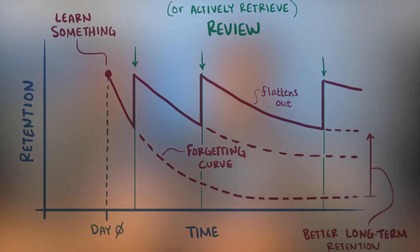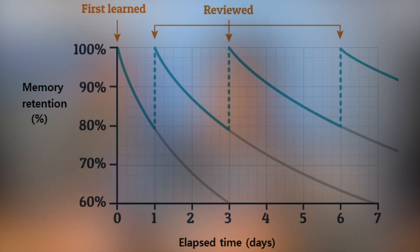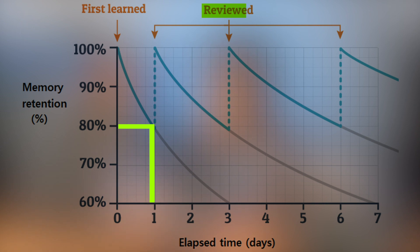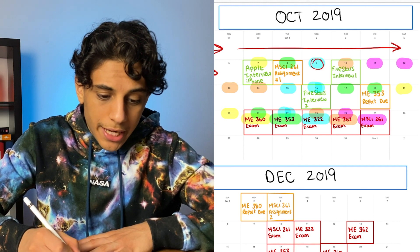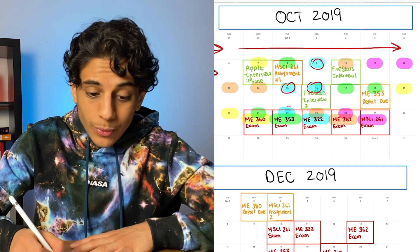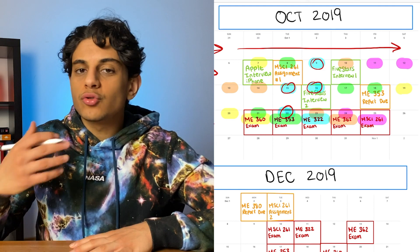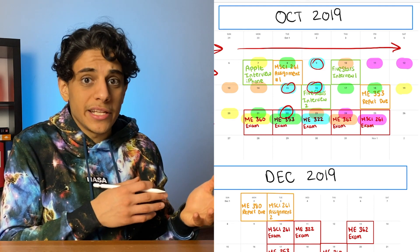When you learn something new and don't review it, the material you studied follows an exponential forgetting curve until you forget it completely. Most people forget 50% of what they learned within the first 24 hours, but if you review what you learned every few days, retention increases until it flattens out after a few study sessions. For example, for my EMY 322 exam highlighted in blue, I spaced out my study sessions by studying on the 9th, 15th, 16th, and 22nd. This approach is so much better than cramming the day before the exam.